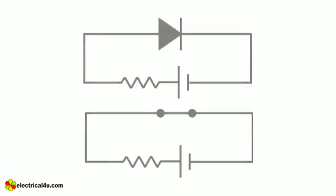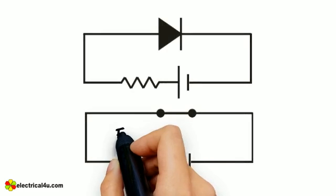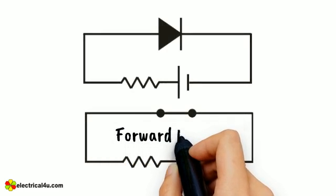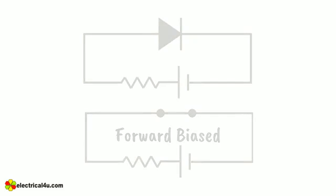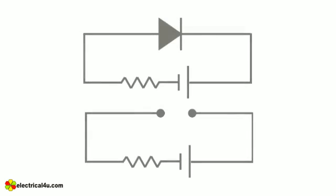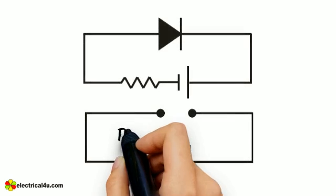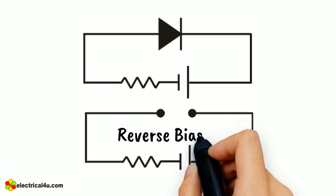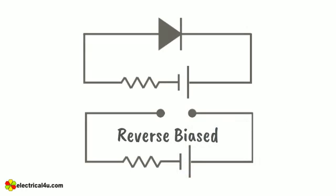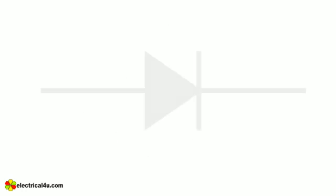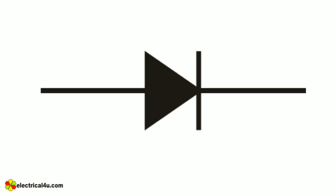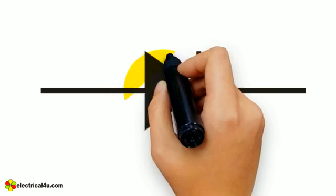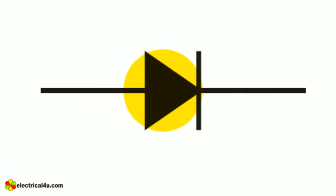A PN junction is the simplest form of the diode which behaves as an ideally short circuit when it is forward biased and behaves as an ideal open circuit when it is reverse biased. The symbol of a diode is shown here. The arrowhead points in the direction of conventional current flow.